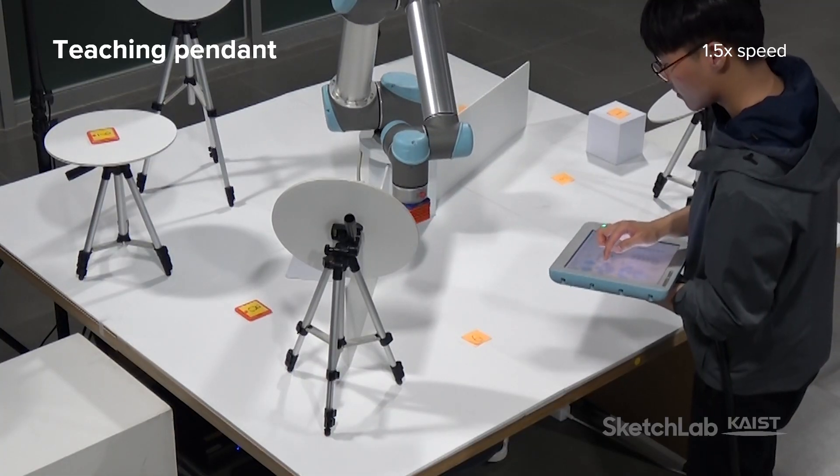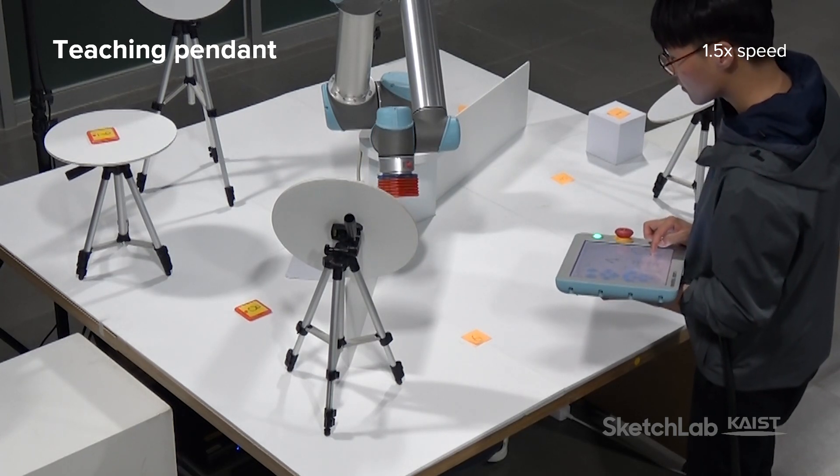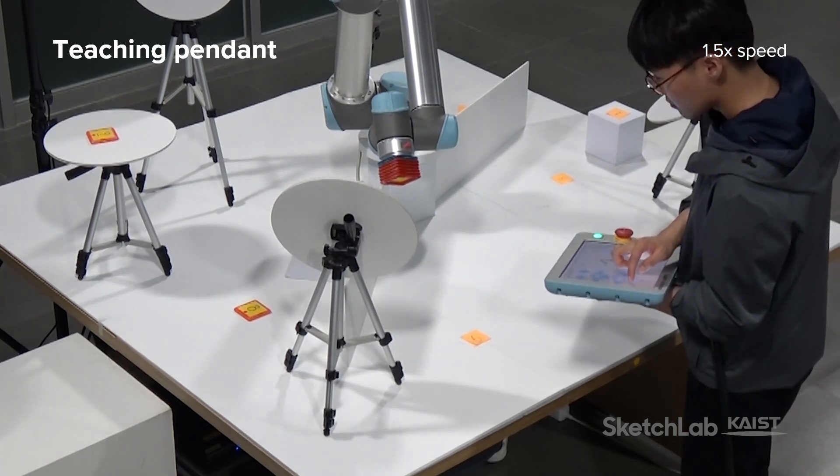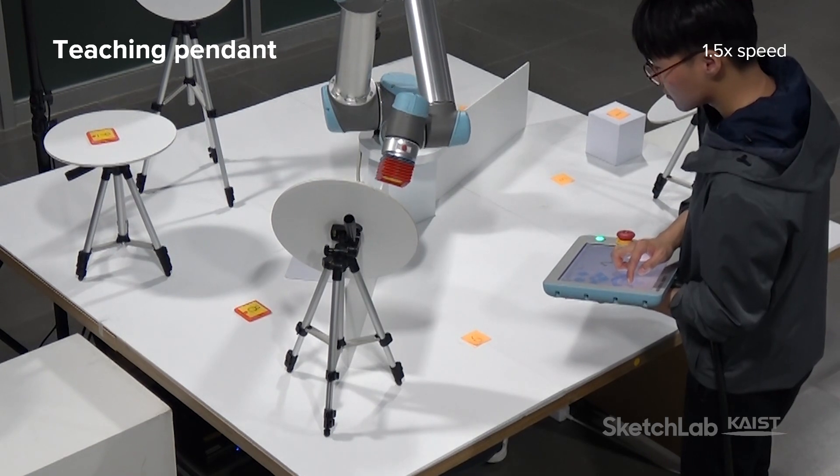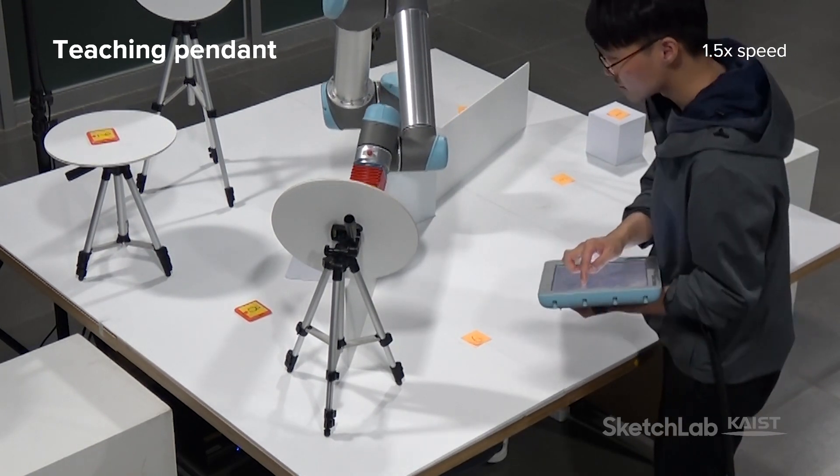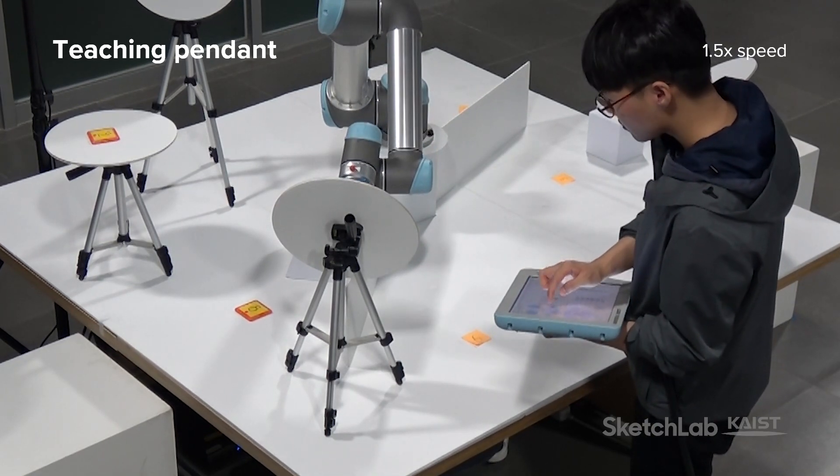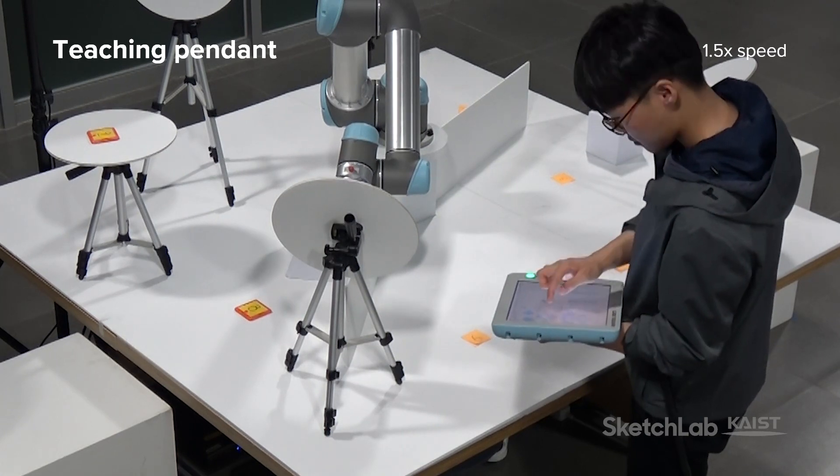However, controlling and teaching a collaborative robot can be challenging. The most common way is to use a button-based teaching pendant, which typically comes with at least 24 buttons for movement. Choosing and pressing the right buttons can be tricky, especially for non-experts. Also, attention can be split between the robot and the handheld teaching pendant.